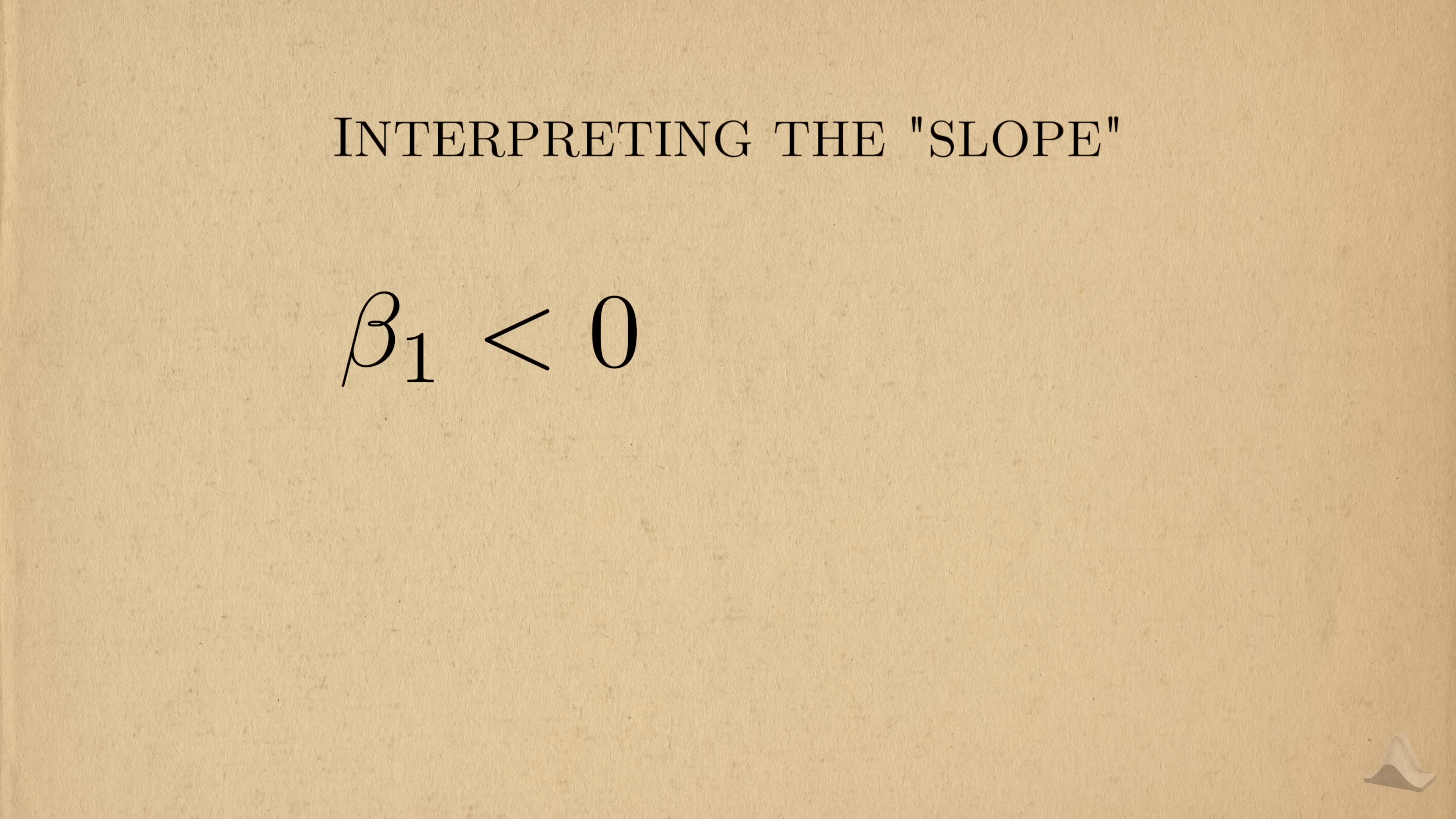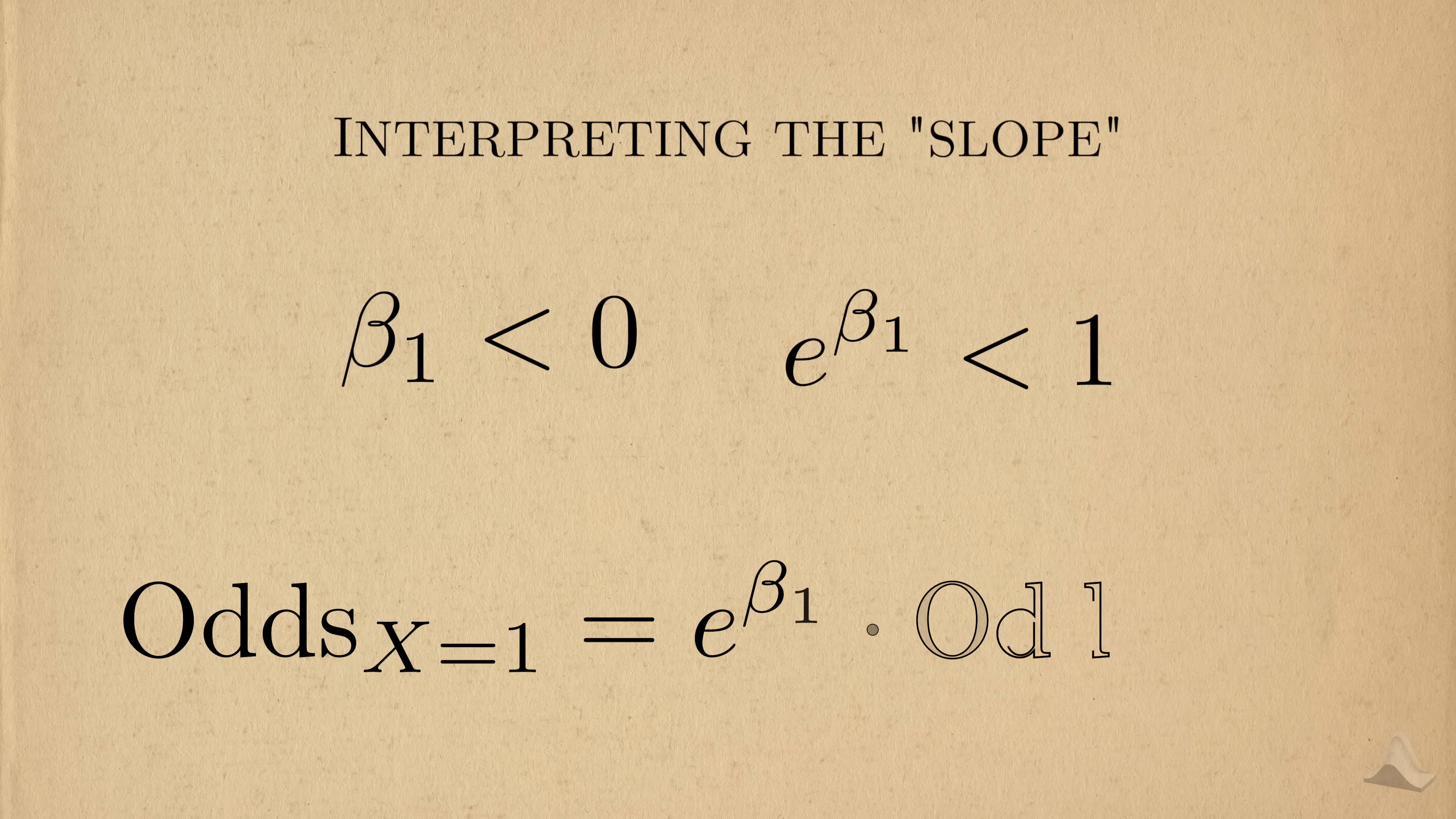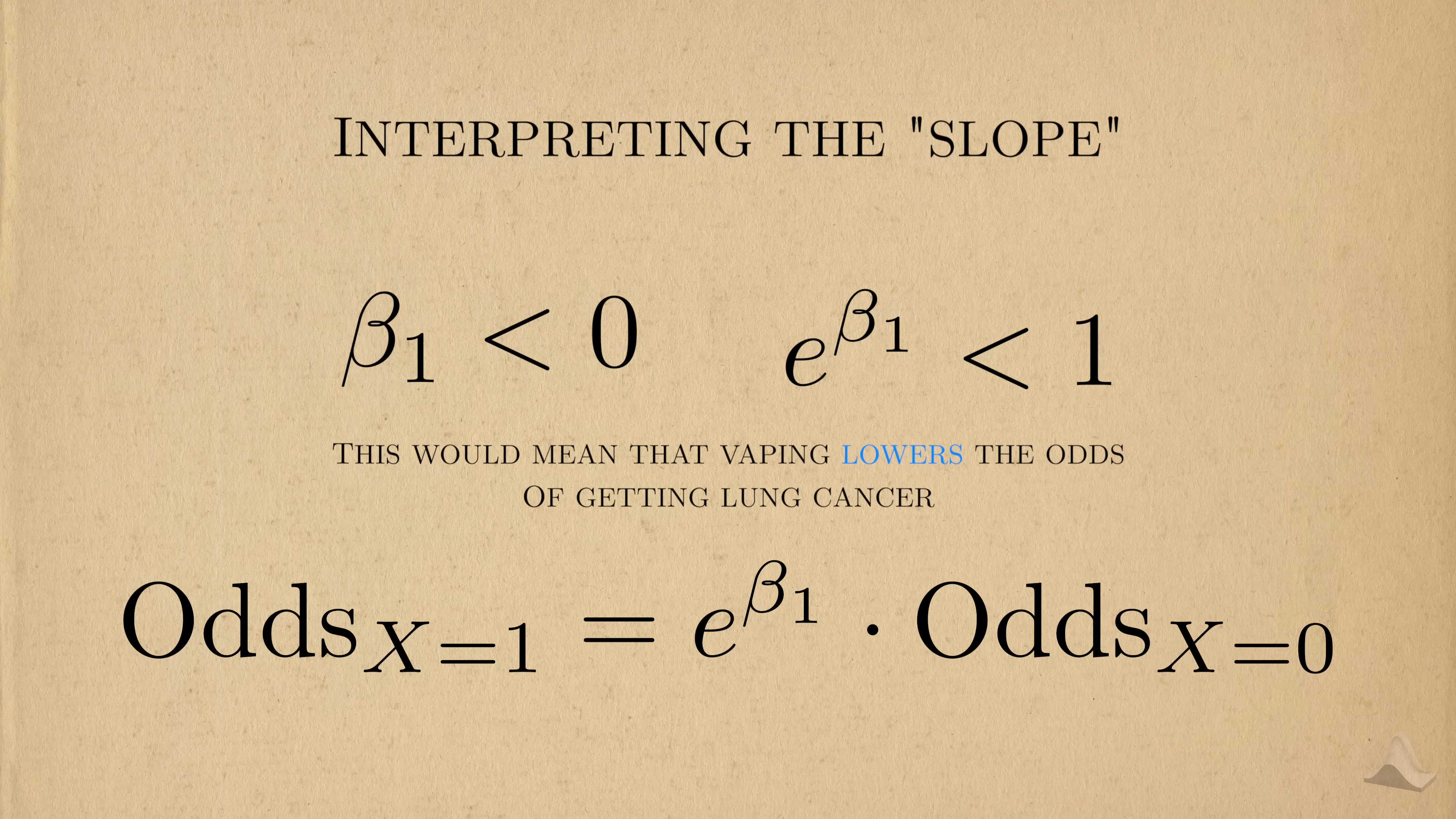Different values for beta 1 can tell us whether or not vaping is good or bad. If beta 1 is negative, then e raised to beta 1 is less than 1, which tells us that vaping lowers the odds of getting lung cancer. In this case, you'd consider vaping to be a protective factor.